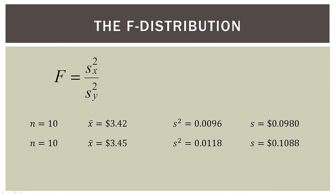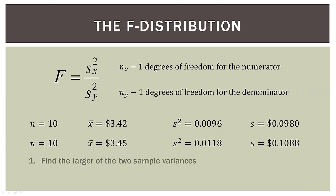So same thing here. Here's our F ratio. We have N minus one degrees of freedom on the numerator, N minus one degrees of freedom in the denominator. So the first thing we do is find the larger of the two sample variances.